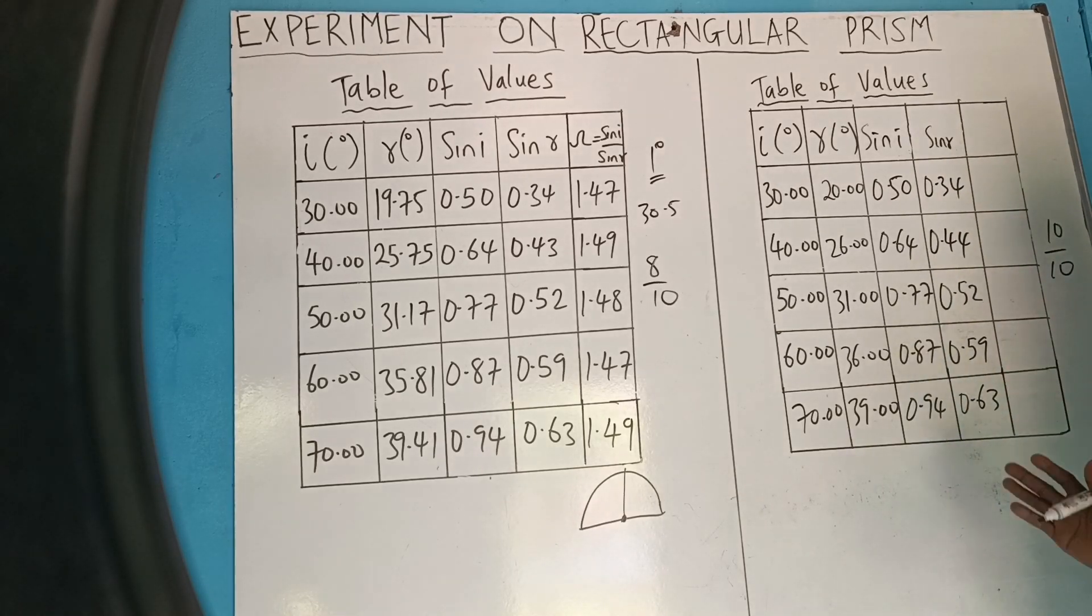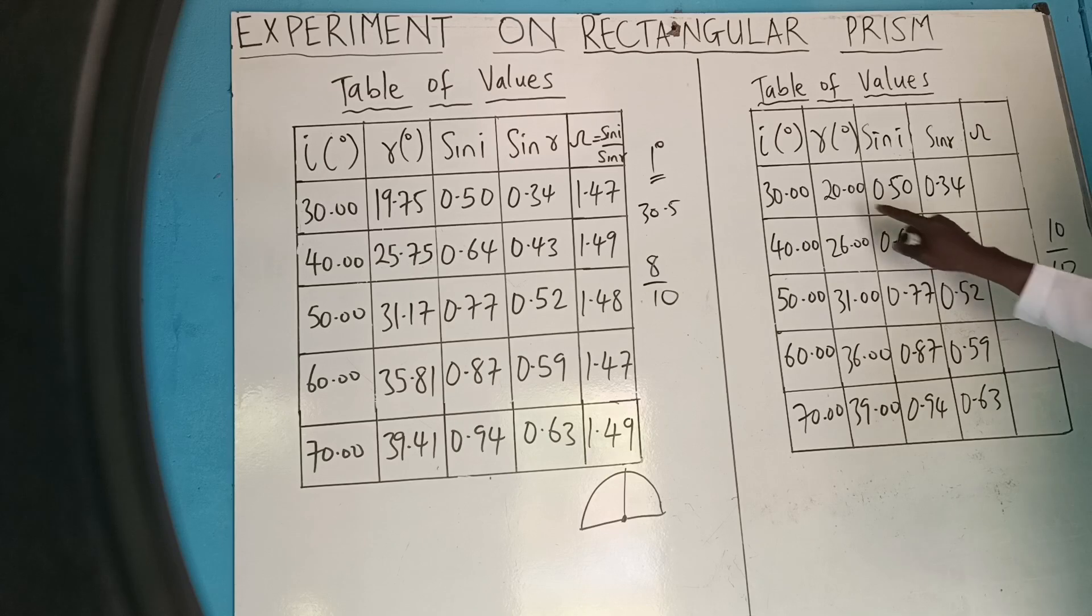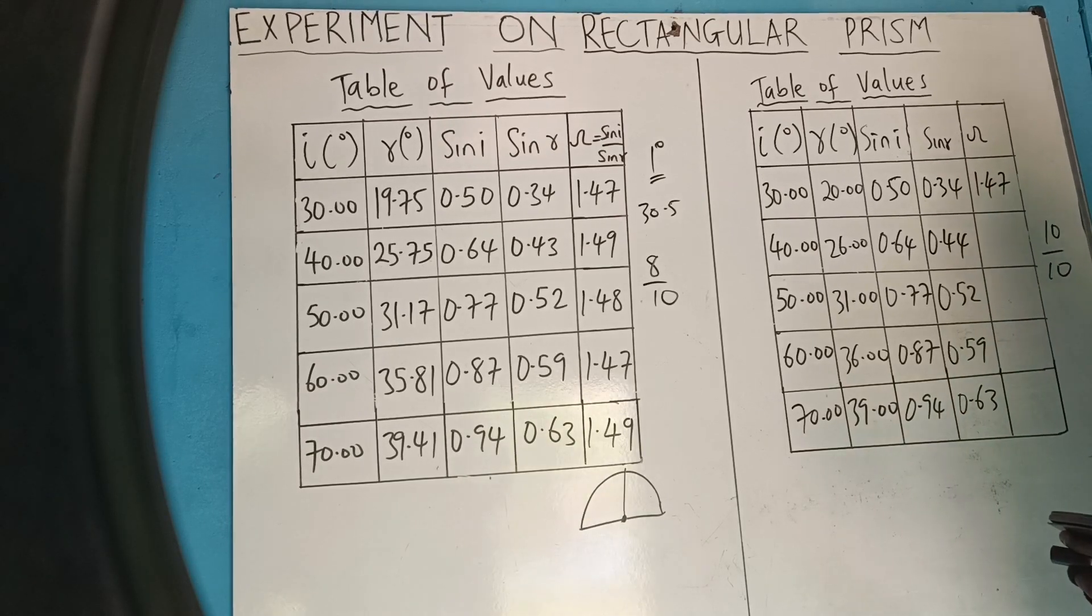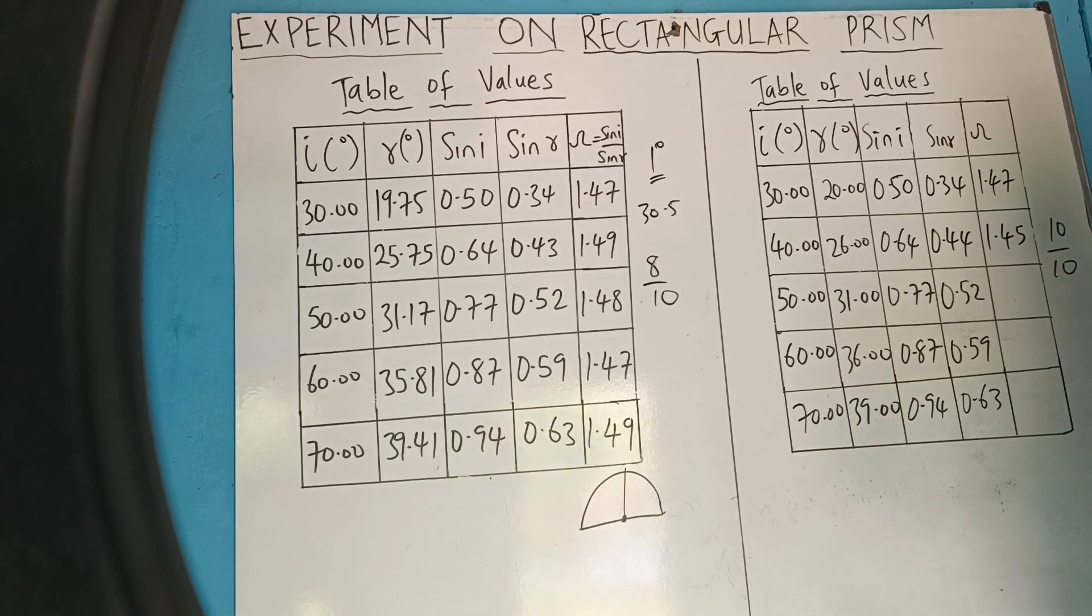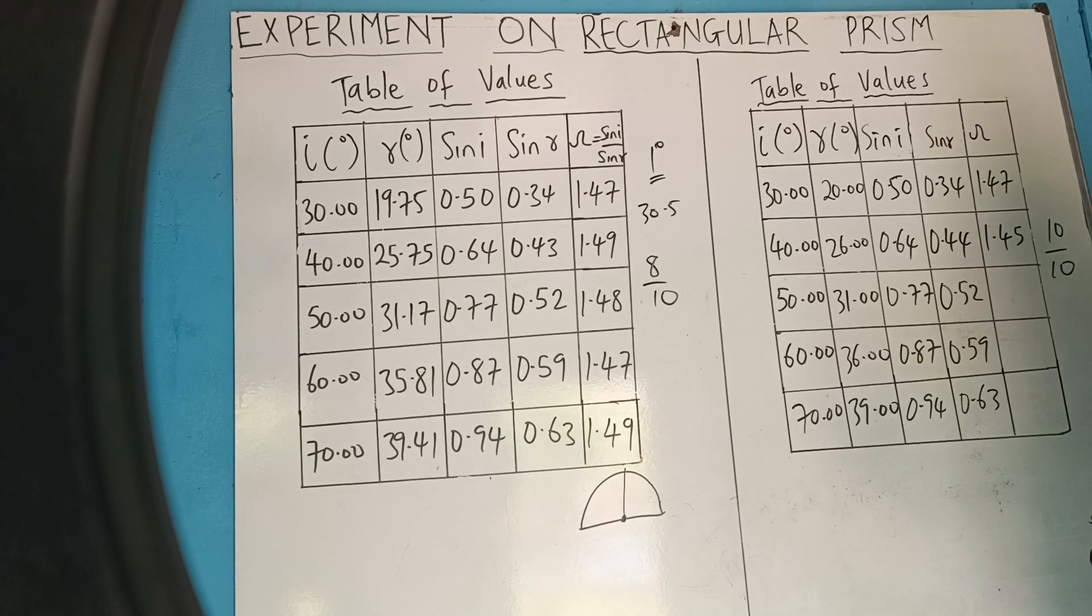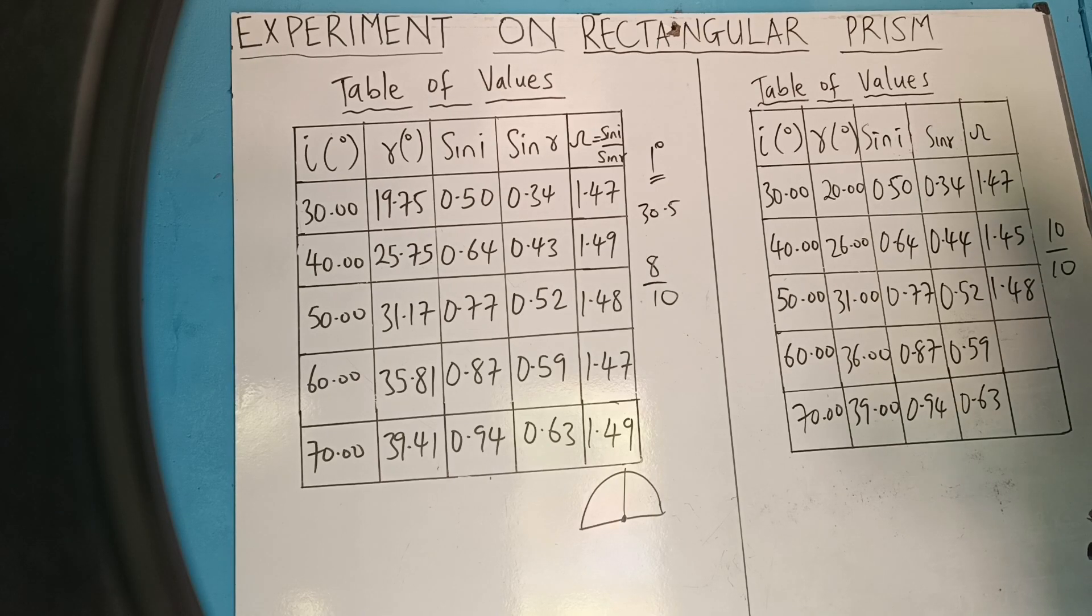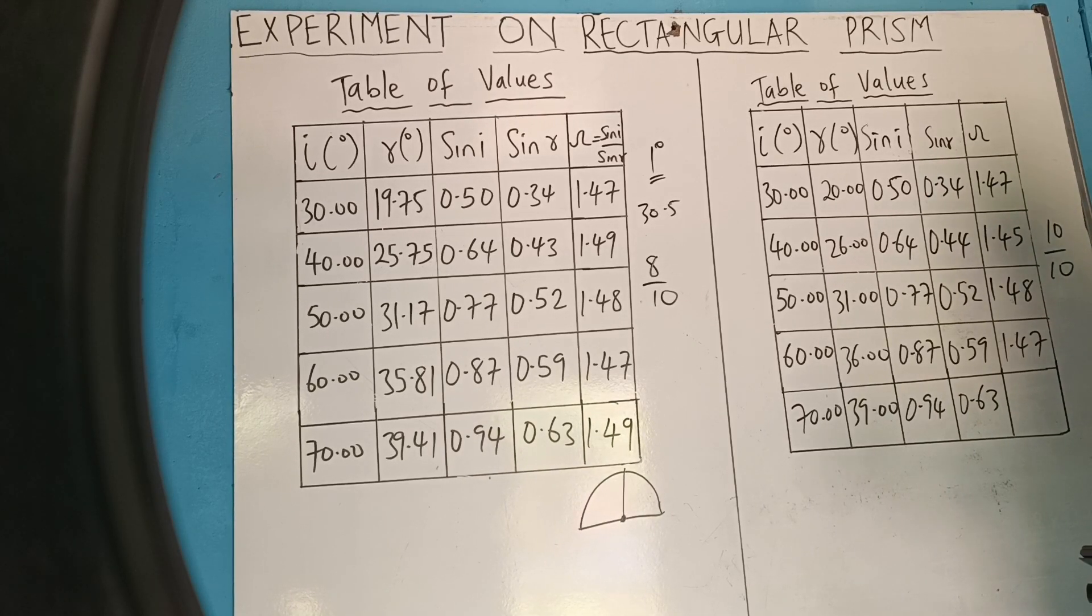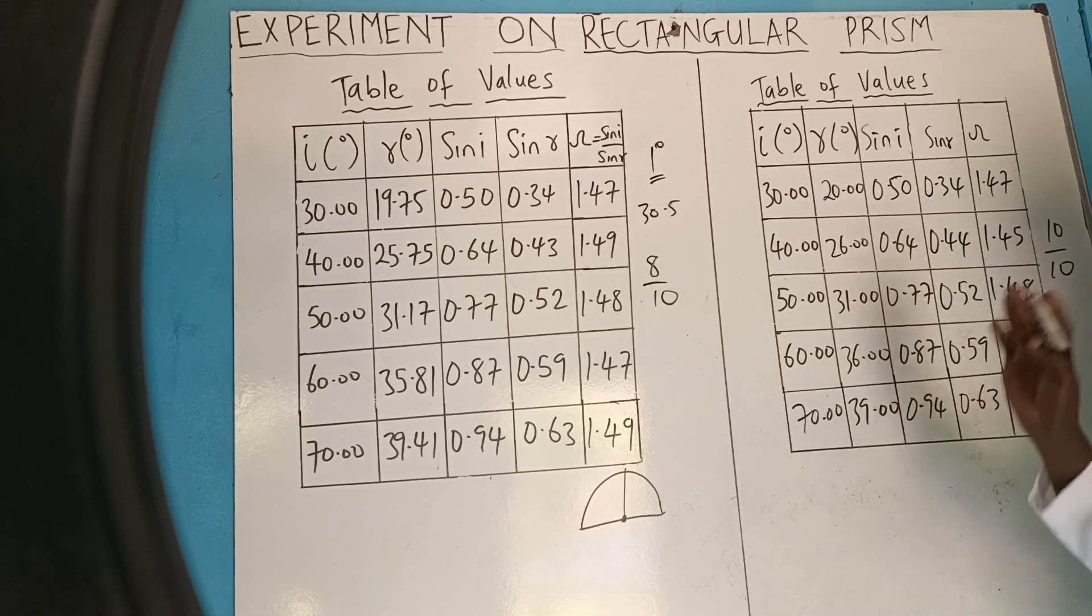Now, this table has no effect to your graph. You shouldn't change your graph you plotted. Just do it. Then we now get our refractive index, which is sin I over sin R. This over this. 0.5 over 0.34. 1.47. 0.64 divided by 0.44. 1.45. 0.77 divided by 0.52. 1.48. 0.87 divided by 0.59. 1.47. 0.94 divided by 0.63. 1.49.